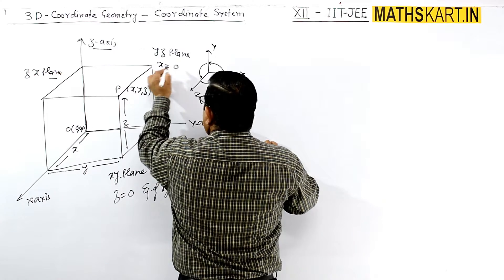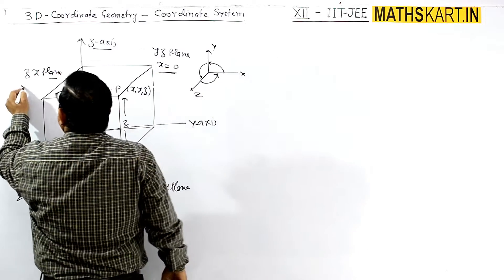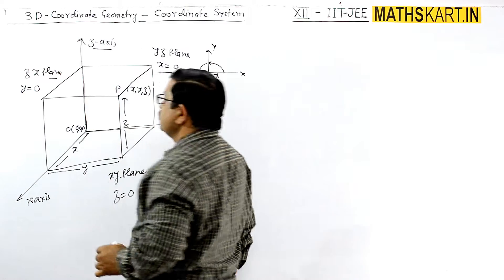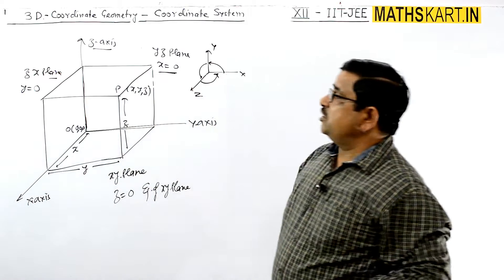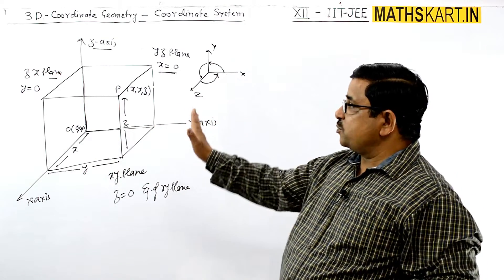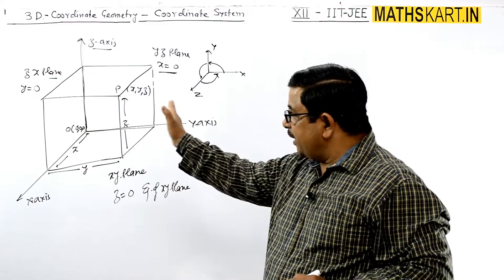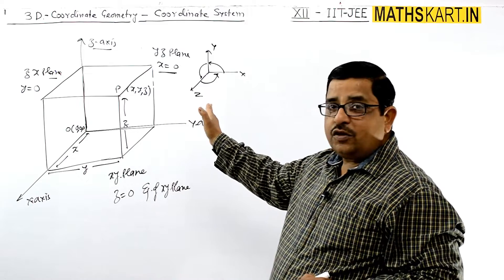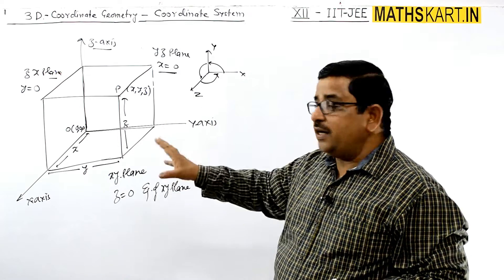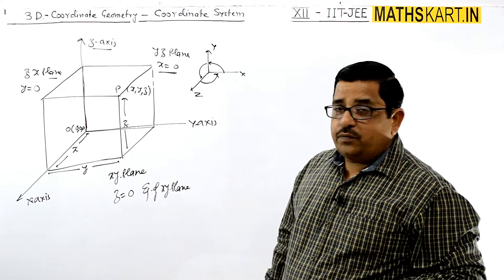The equation of the ZX plane is x equals zero, and for that particular plane the equation is y equals zero. So we have three coordinate planes with their equations.